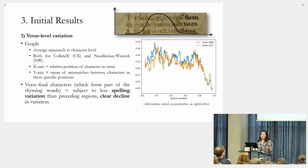We did this alignment to validate the constraint transmission hypothesis. One of the main ideas is that the last word of a verse is more protected by the rhyme. As you see there, in the last position, there is less variation. Here you see our graph. We took the average mismatch at the character level resulting from the alignment, both for CollateX and Needleman-Wunsch. On the x-axis, you have the relative position of a character in a verse. On the y-axis, you have the mean of mismatches. Indeed, the final characters which are part of those rhyming words are less subject to spelling variation than the preceding regions of a verse. We see a clear decline in variation which could be caused by the fact that there are rhyming words.